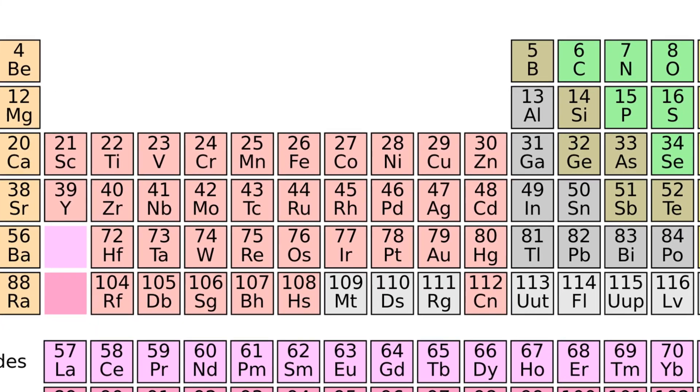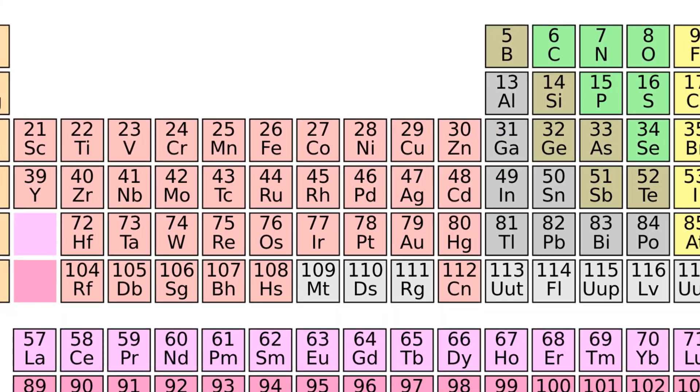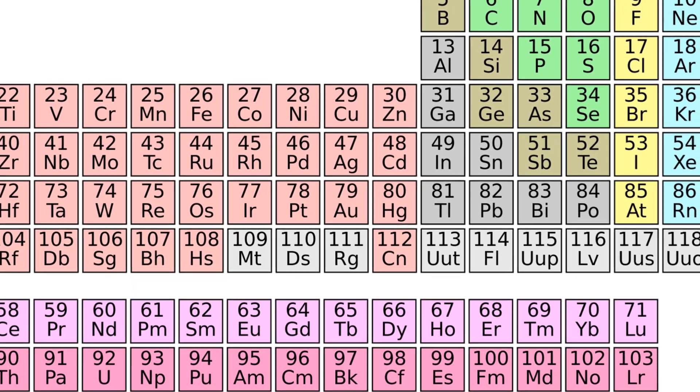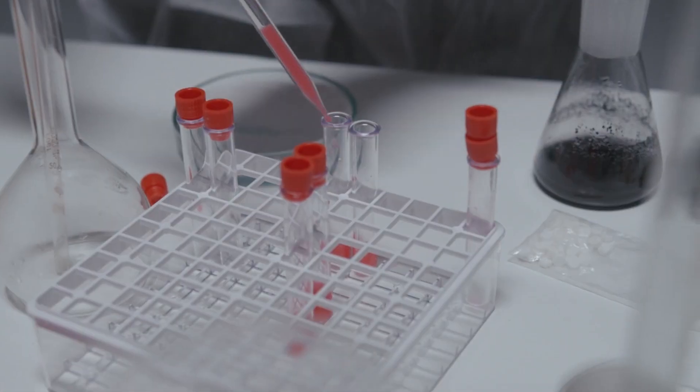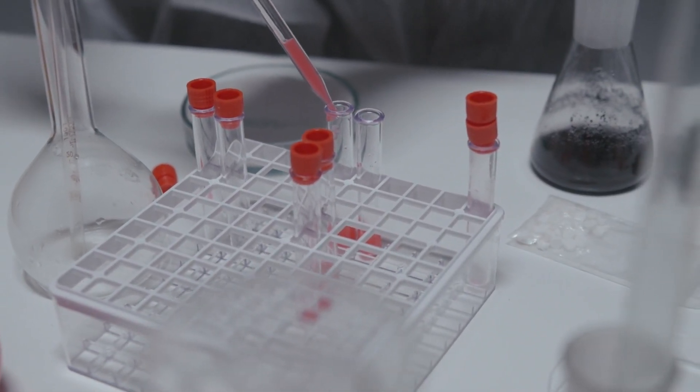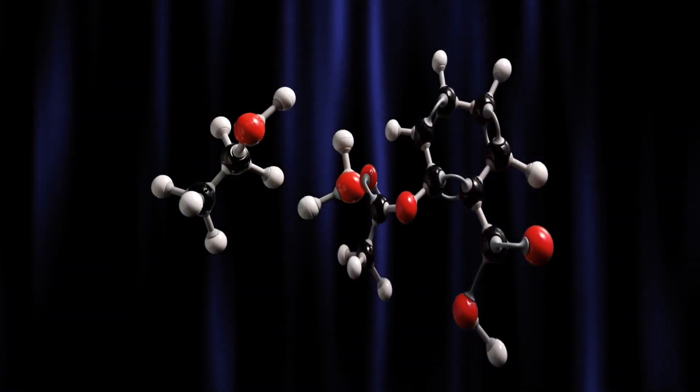Although Johann Doberiner tried to organize the elements, it wouldn't be until 1863 that English chemist John Newlands would publish the first-ever Table of Elements. He divided the 56 elements of the time in 11 groups and arranged them according to elements' atomic weights.